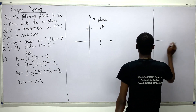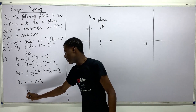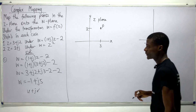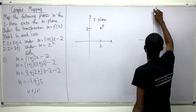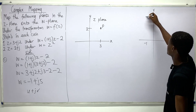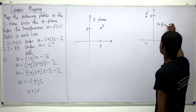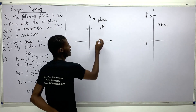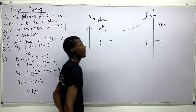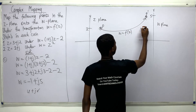Now for the w-plane: remember that for w we use u + jv, not x and y. My u is −1, so I plot that to the left of the origin, and my v is 5, so I mark 5 on the vertical axis. Tracing these gives me the mapped point, which I'll call P prime. That's our w-plane.